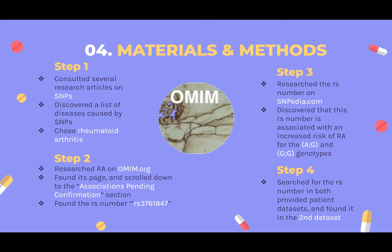Now we move on to the materials and methods. First, I tried to find journal articles talking about SNPs to see if I could find any examples listed. Eventually I found one that listed rheumatoid arthritis and chose that as our disease. Next, I searched for rheumatoid arthritis on the website OMIM.org, which is a compendium of all known Mendelian disorders. I found the page for rheumatoid arthritis, read through until I got to the associations pending section of the article, and found the RS number RS3761847. I then went to SNPedia.com, a website that lists all known SNPs and all available information on them. Once I found our RS number, I noted its correspondence with the three genotypes listed. Finally, I searched for the RS number in both the datasets provided to us and found it in the second data set.